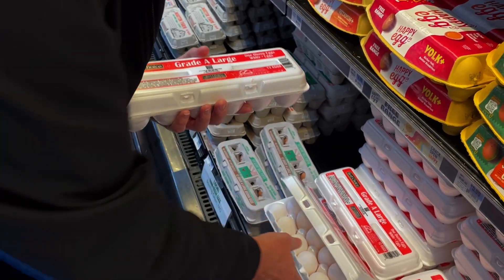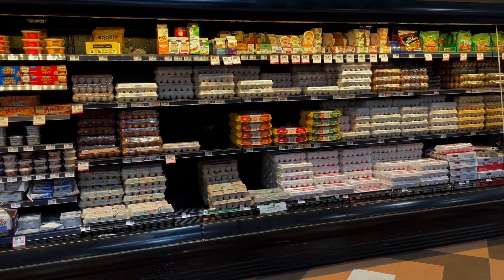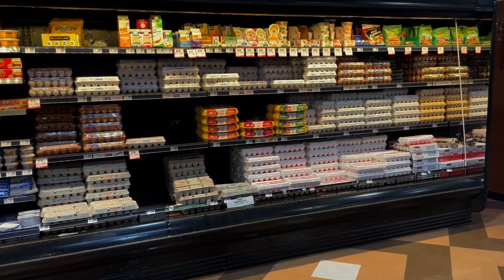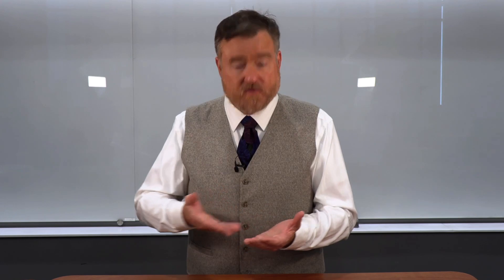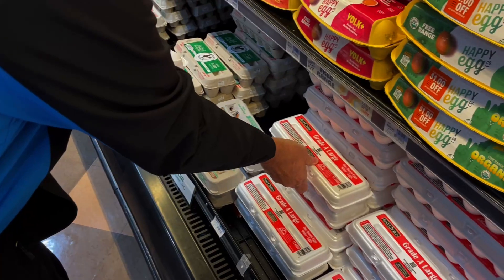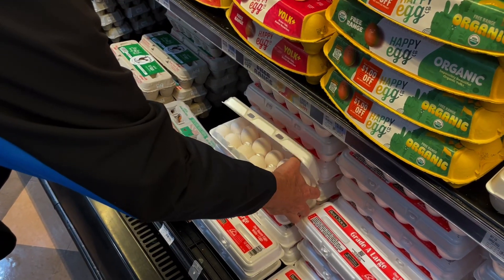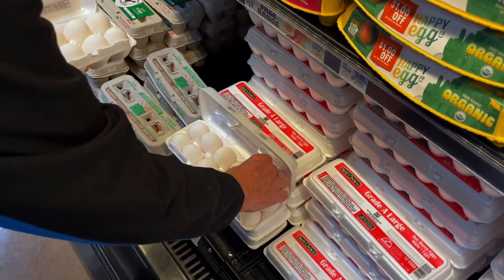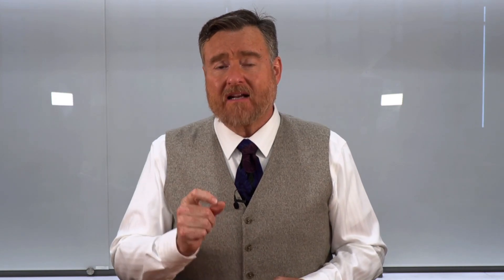But let's ask a different question: what is the average number of broken eggs among this entire population of eggs? Here's how we might approach this. We could open the first egg container — maybe there are no broken eggs in this first one. Then we open a second container and find one broken egg. So what do we know? That the average number is at least one in 24.